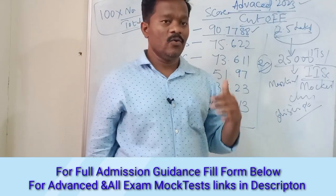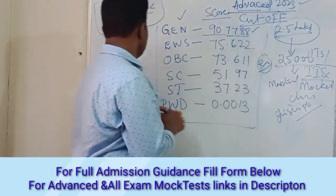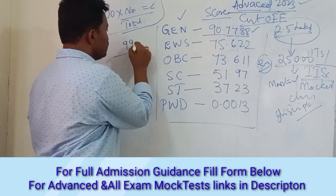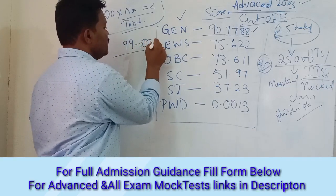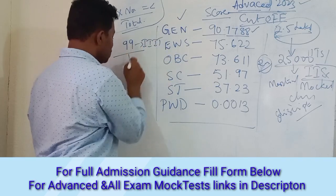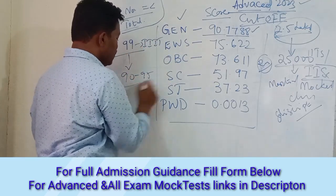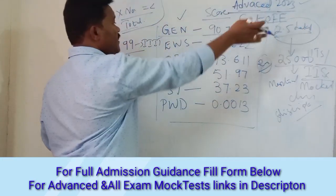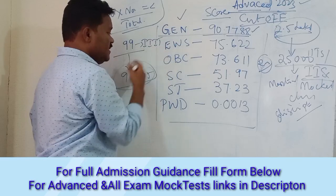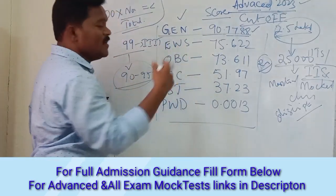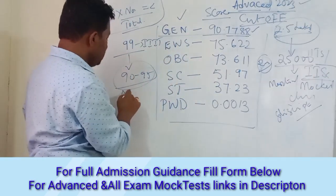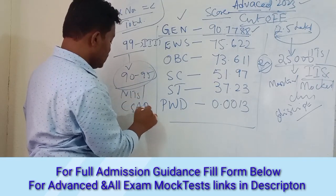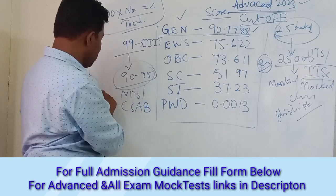Whenever you are a Mains qualifier, for example, even in the 99 percentile range, people at the 90 or 95 range are also qualified here and there are a few spots for IITs. Even NITs and IIITs are available. But not only that, there are many other institutions — even through CSAB, there are different institutions like GFTIs.